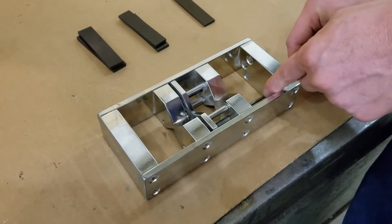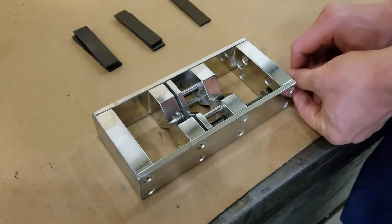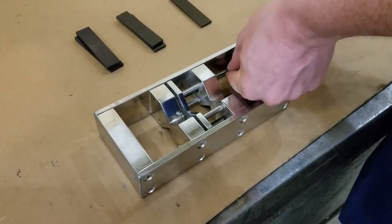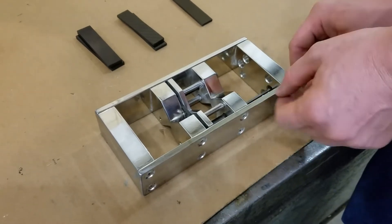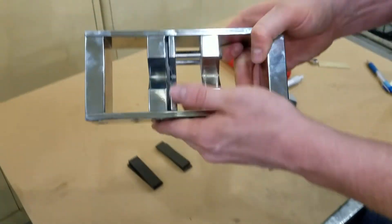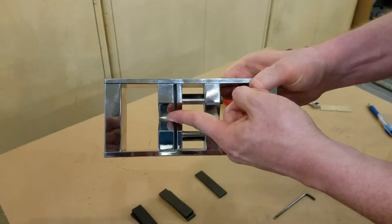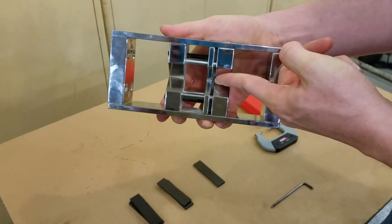Then you tighten down your set screws on the sides. Tighten them good and snug because you don't want your blank moving. When we machine it, we will machine on one side, then flip the template around and machine the other side.